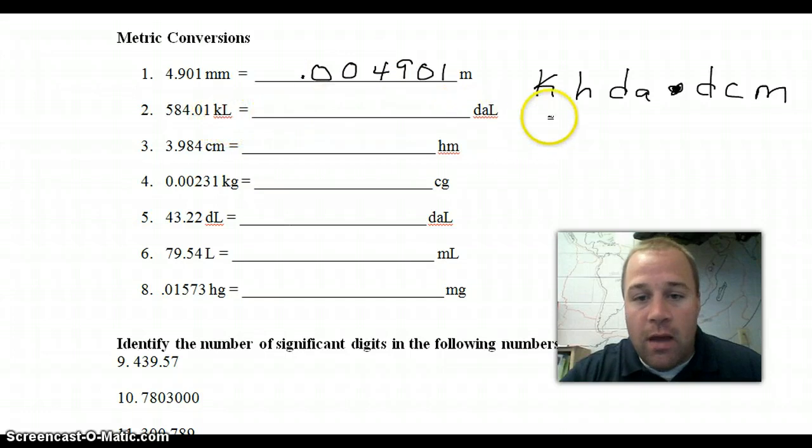The next one going kiloliters to decaliters. Kiloliters is right here. Decaliters is right here. So we're going 2 to the right. So 1, 2 to the right: 58401.